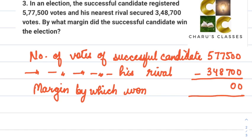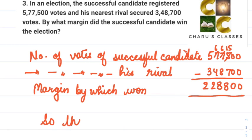Number of votes of the successful candidate is 5,77,500 and number of votes of his rival is 3,48,700. The margin by which he won is the difference of these two. Subtracting: 5 minus 7 — borrow, becomes 15 minus 7 = 8; next digit borrows giving 16 minus 8 = 8; then 6 minus 4 = 2; and 5 minus 3 = 2. The margin by which he won is 2 lakh 28 thousand 8 hundred votes.